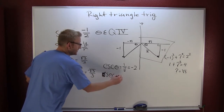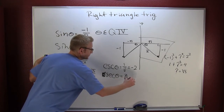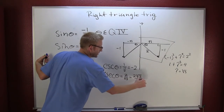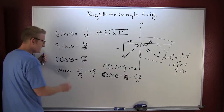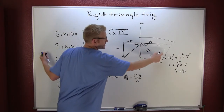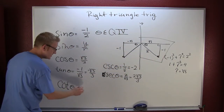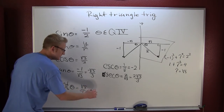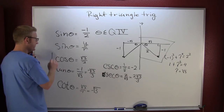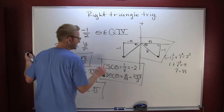What about the secant? The secant of theta is the reciprocal of the cosine, so that's going to be 2 over root 3. Most people rationalize that. And the cotangent — we could take the reciprocal of tangent, or we know the cotangent is adjacent over opposite. So the cotangent is going to be root 3 over minus 1, which is minus root 3. So here are all five additional trig values, giving you all six trigonometric functions.